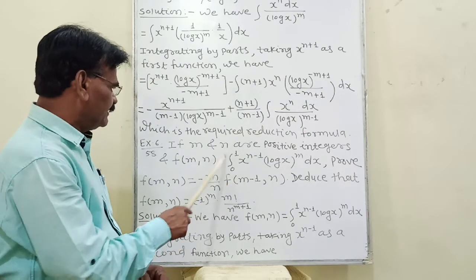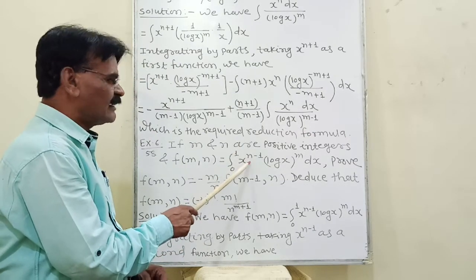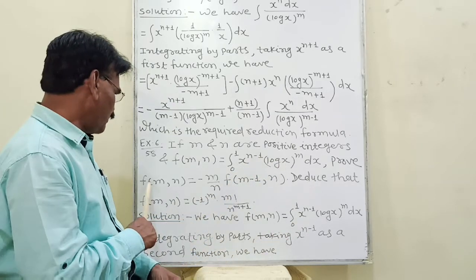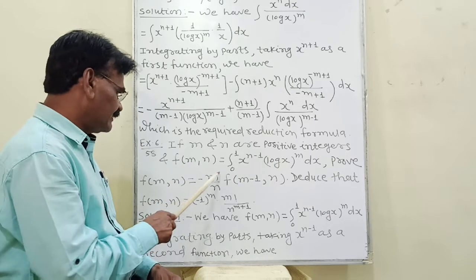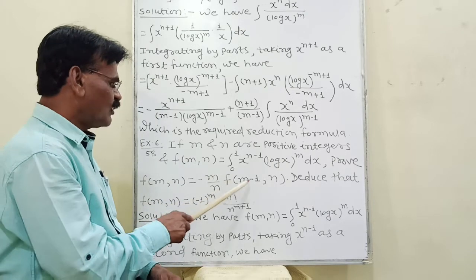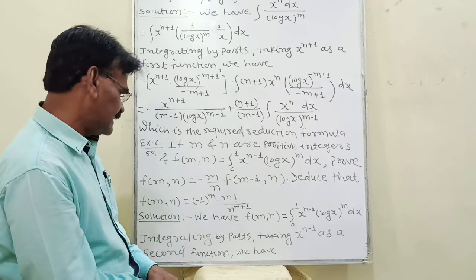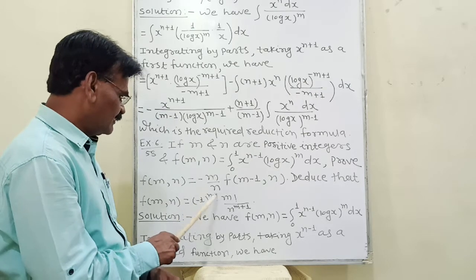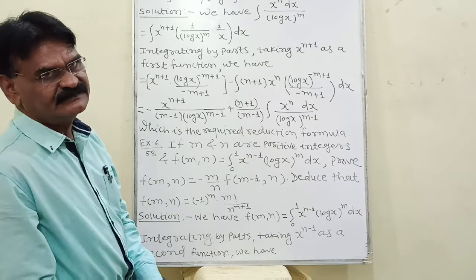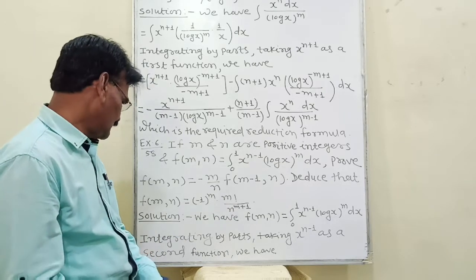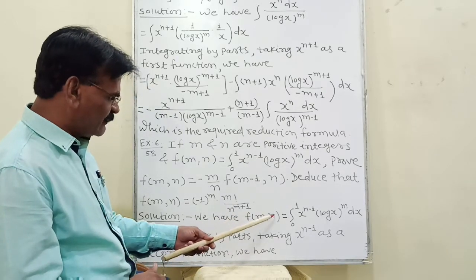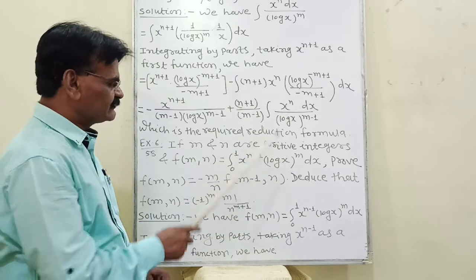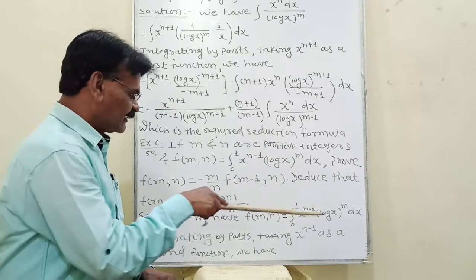For the next part, we define f(m, n) as the integral from 0 to 1 of x^(n-1) times (log x)^m dx. We must prove that f(m, n) = -m/n times f(m-1, n), and deduce that f(m, n) = (-1)^m times m! divided by n^(m+1).